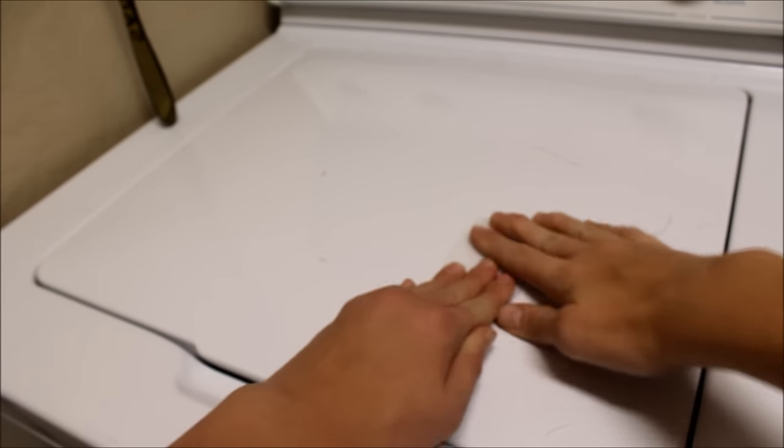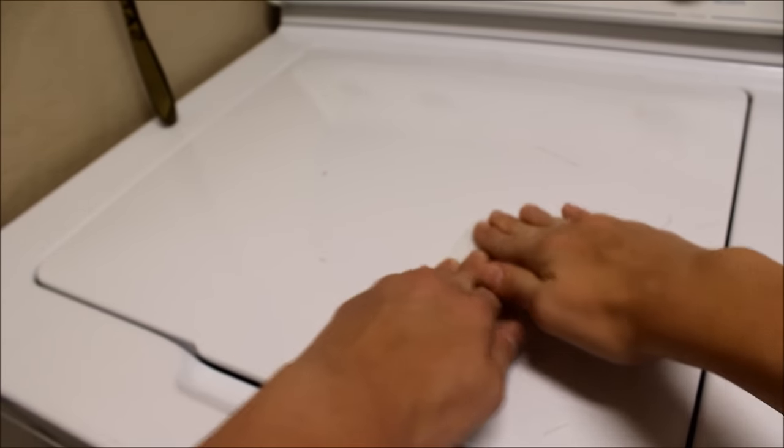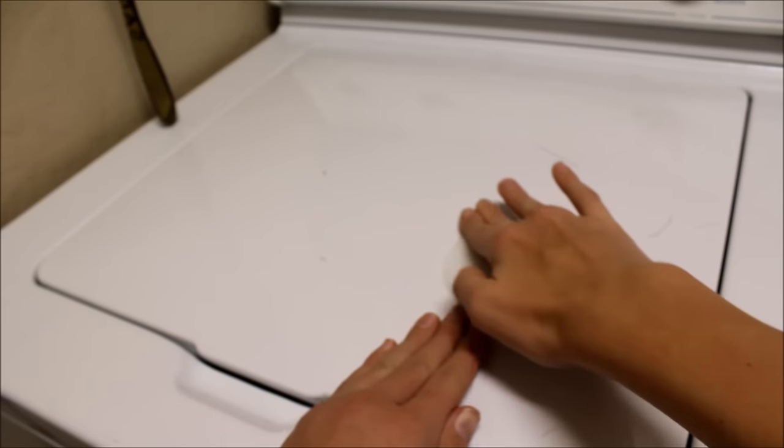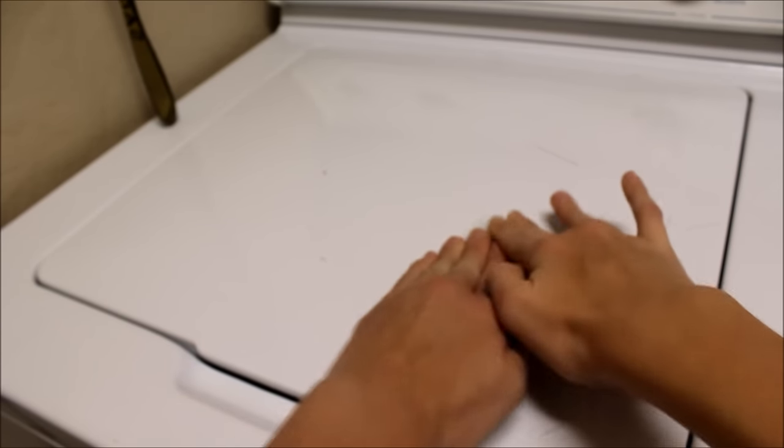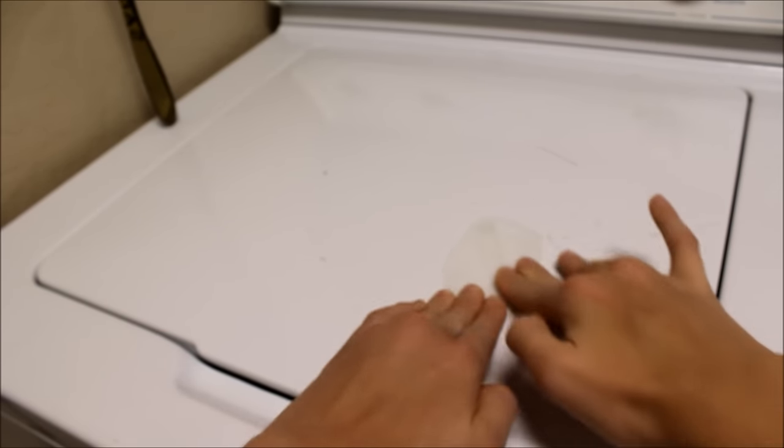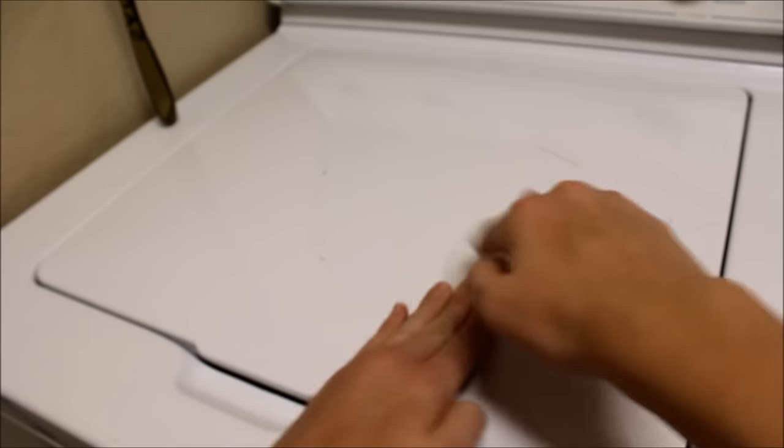So next, place it down on the surface you desire your suction cup to stick to and press down really firmly so that double stick tape can stick really well. It can take a couple seconds of pressing really hard to get that to stick well.